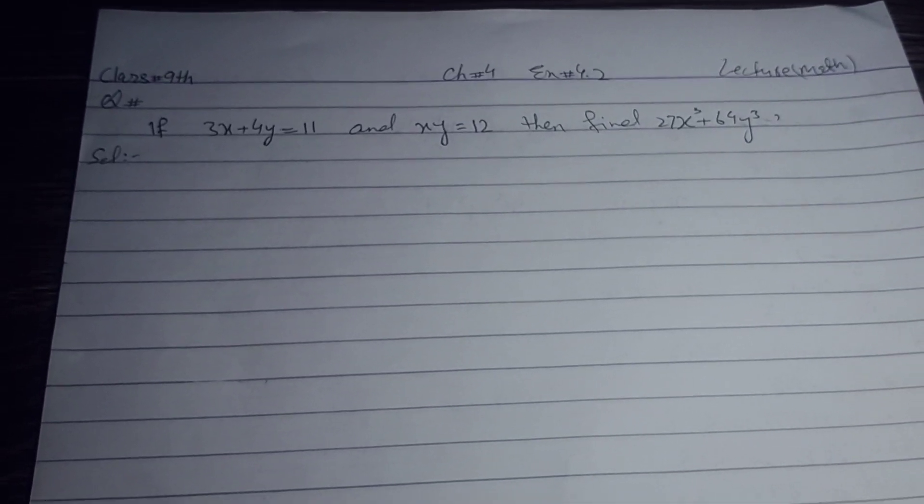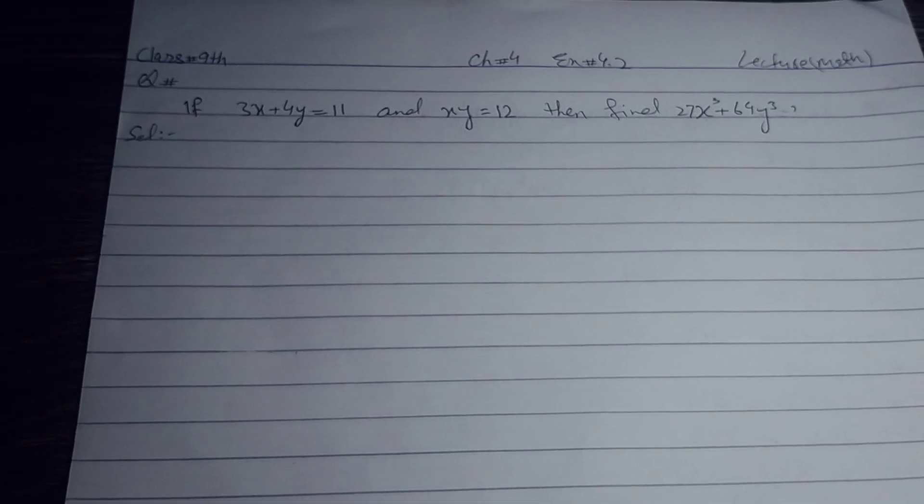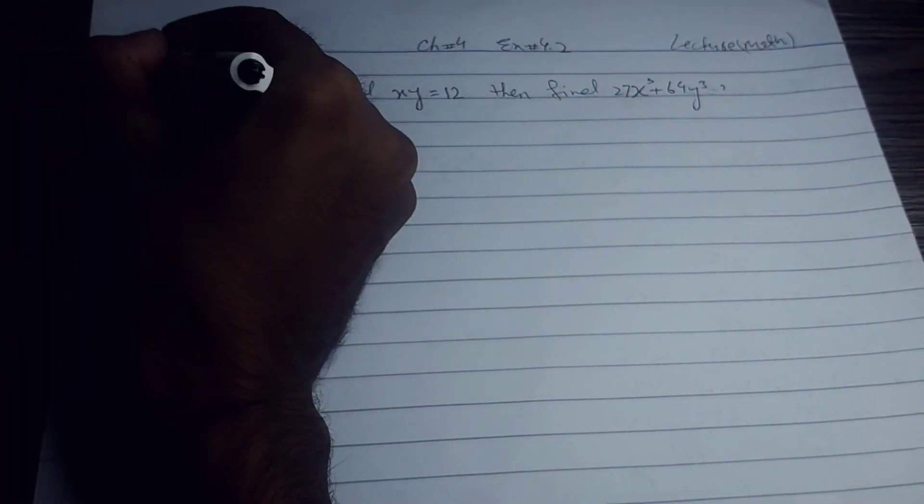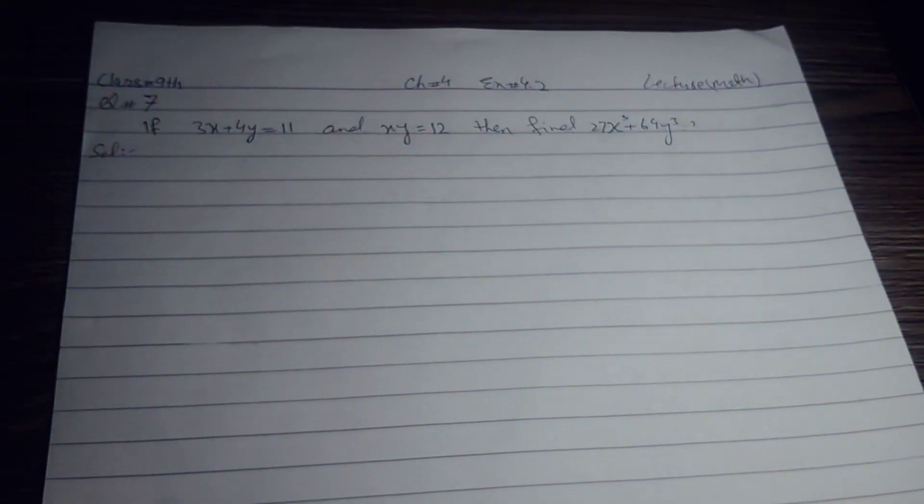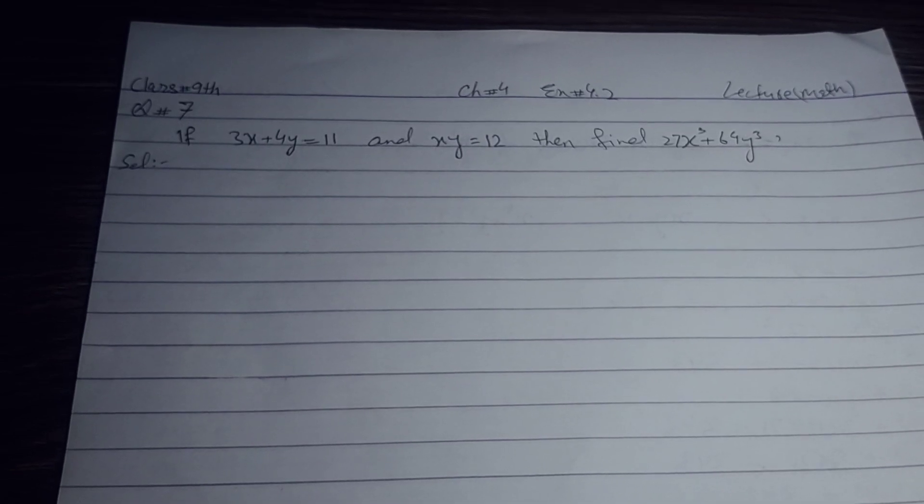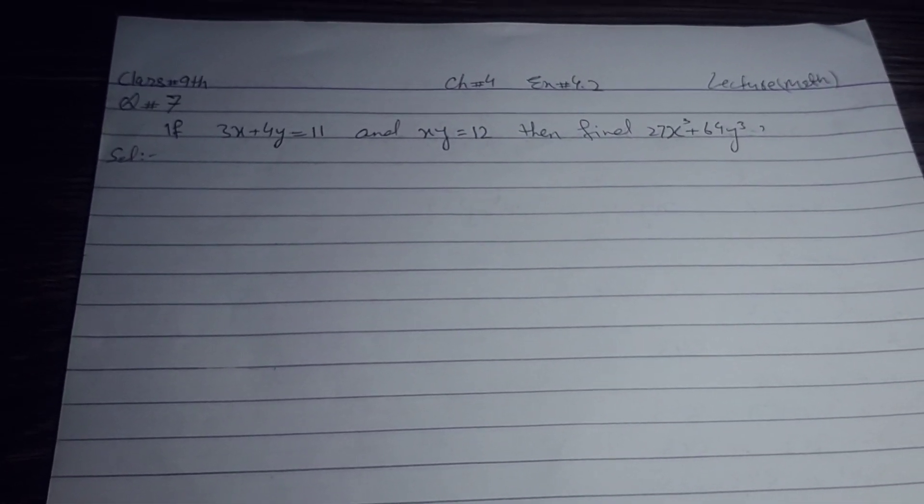Assalamualaikum students, class 9th chapter number 4 exercise 4.2 question number 7. If 3x plus 4y equals 11 and xy equals 12, then find 27x³ plus 64y³.